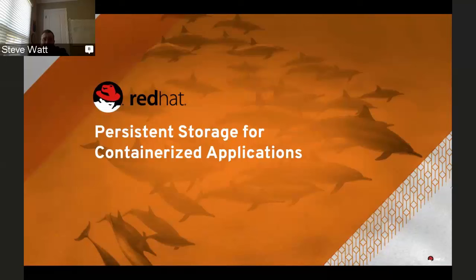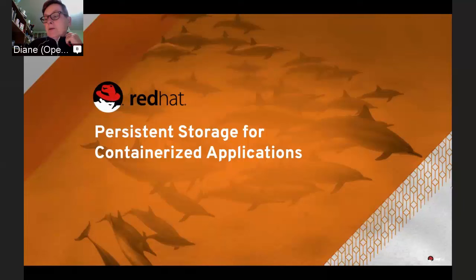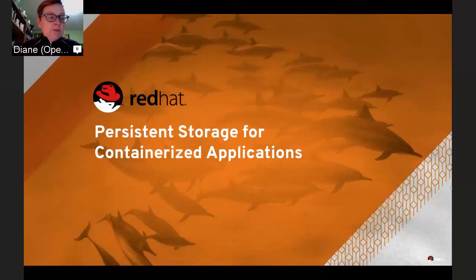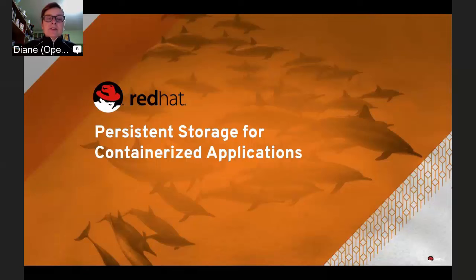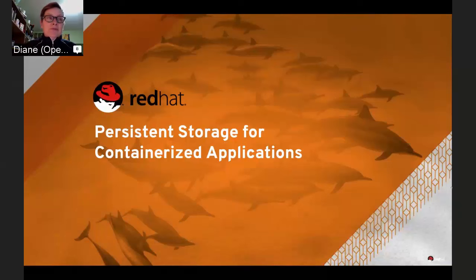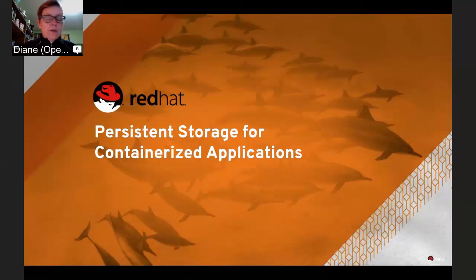Hello everybody, this is the OpenShift Commons briefing. We do this every week on Thursday mornings, addressing topics of interest to the OpenShift community. Today's topic is persistent storage for containerized applications. Steve Watt, chief architect in the emerging technologies group at Red Hat, is going to walk us through how to do this. We'll have Q&A through the chat at the end of his presentation and demo.